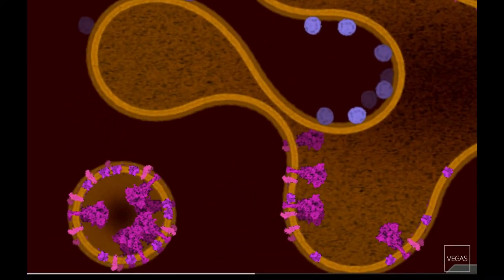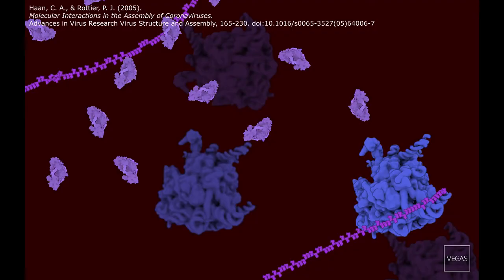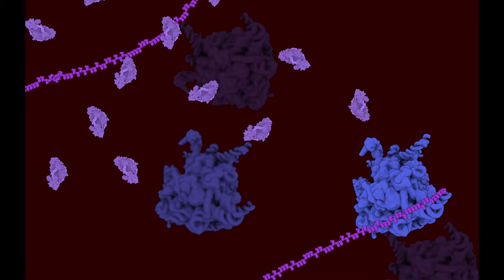The ERGIC, or the Golgi apparatus membranes. Unlike other structural proteins, the N-protein is presumably synthesized in free ribosomes, which allow it to end up in the cytoplasm to then join viral RNA.